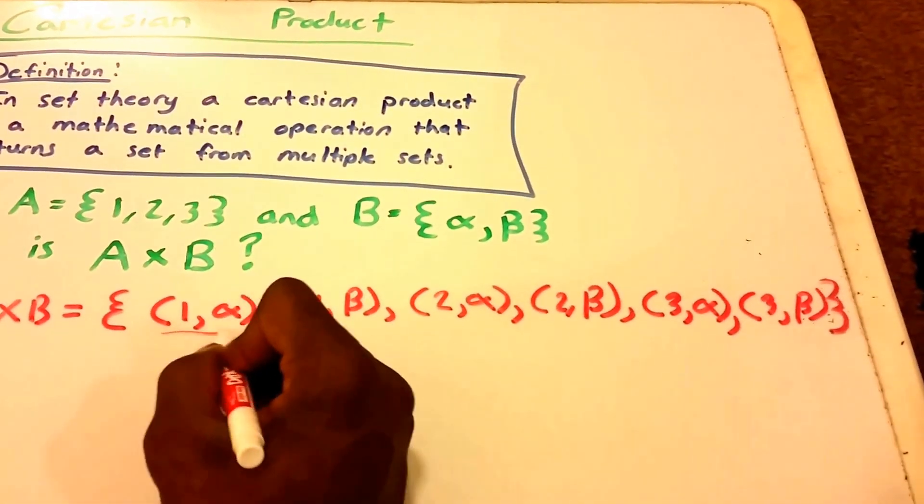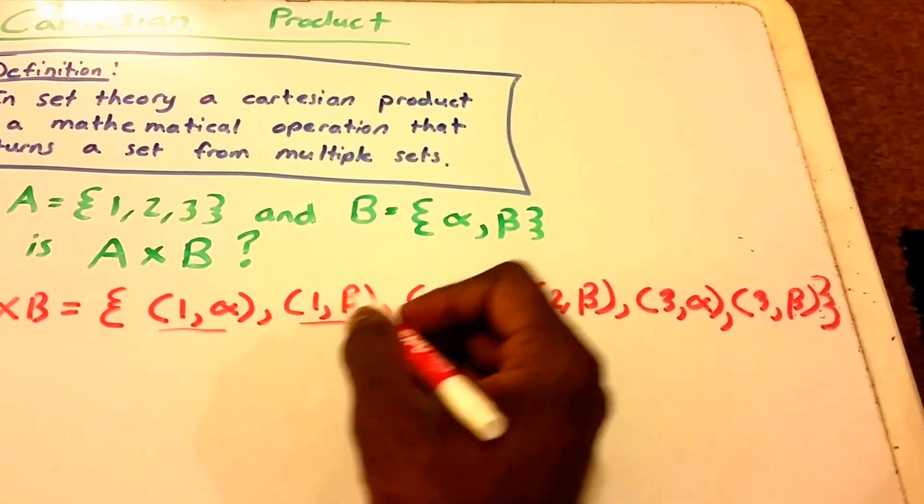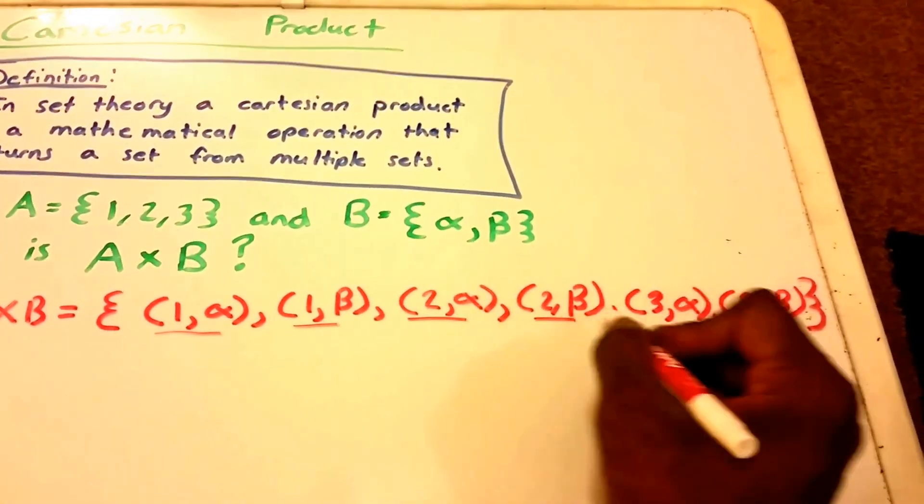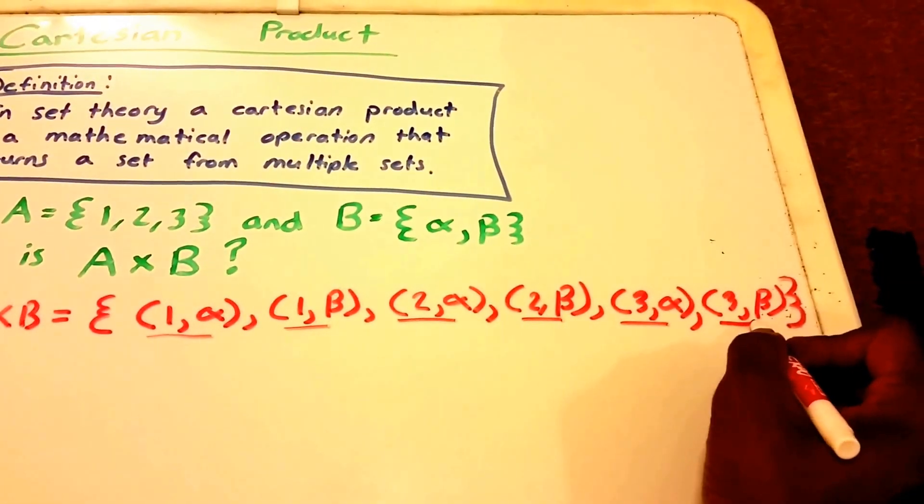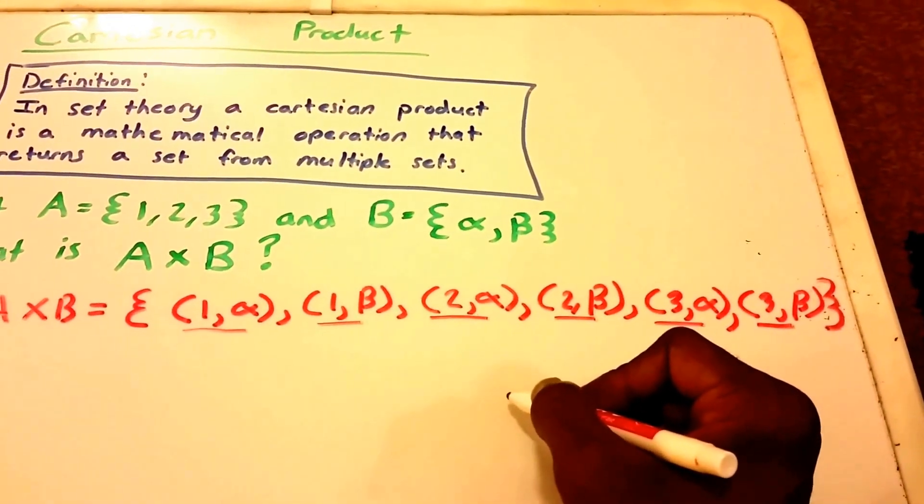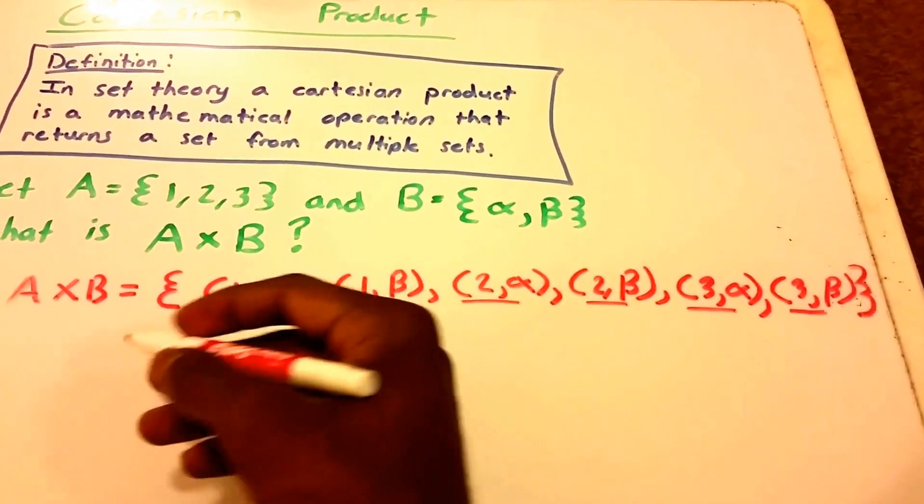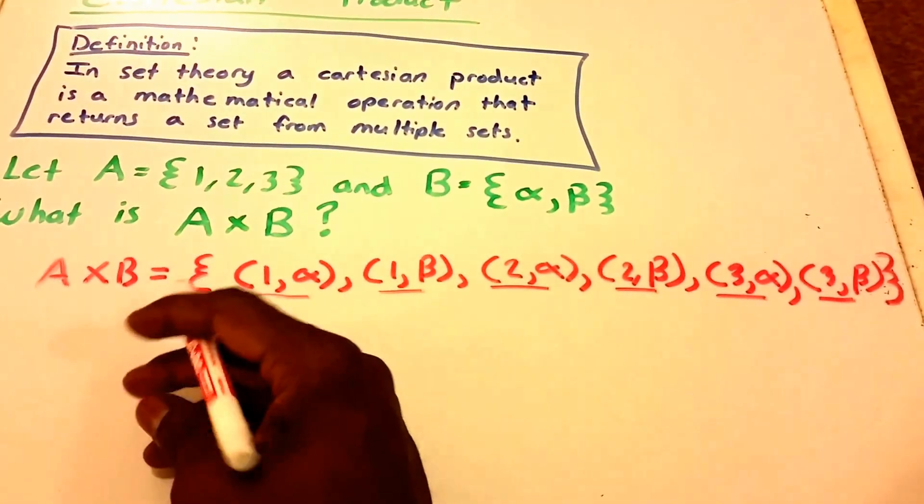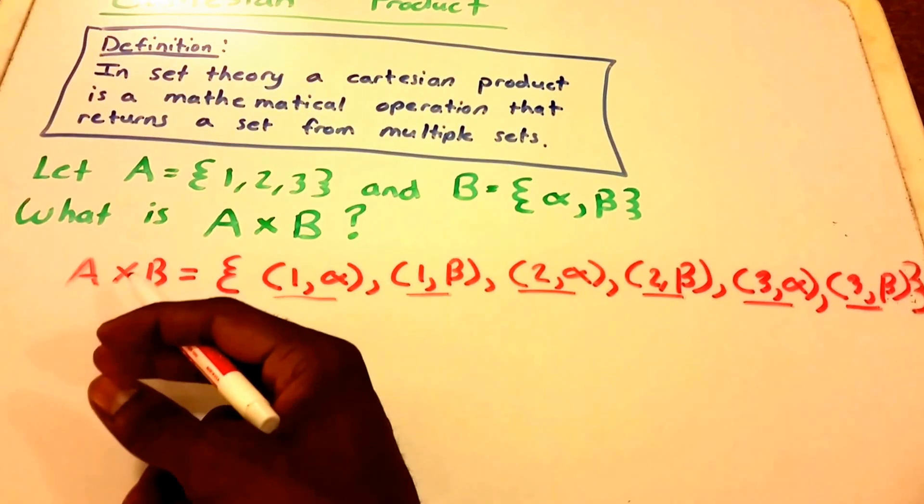So we have 1, 2, 3, 4, 5, 6 ordered pairs. And now, this is actually what the Cartesian product would equal.